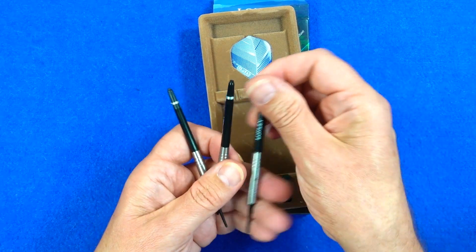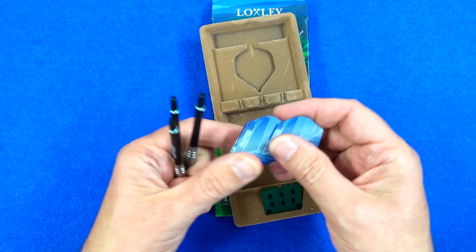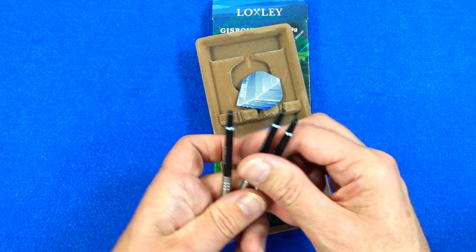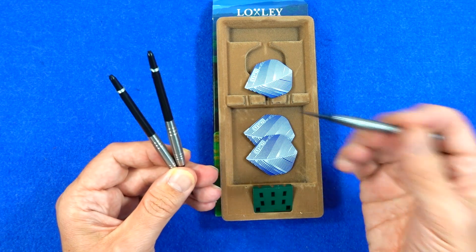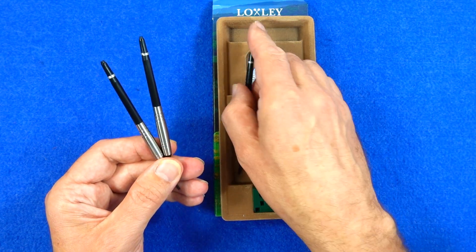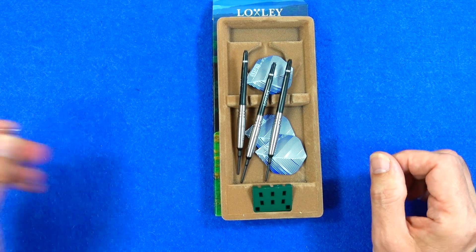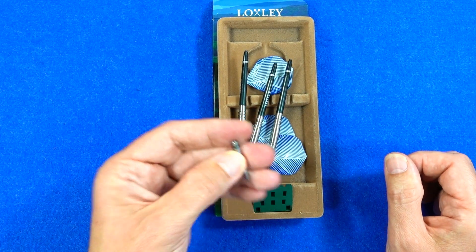Anyway they're fitted with the Loxley medium nylon stems and they come supplied with the Loxley standard shape flights with the feather effect. Now also they've got the soft tips fitted but I'll probably use some steel tip conversion points when I come to throw them.